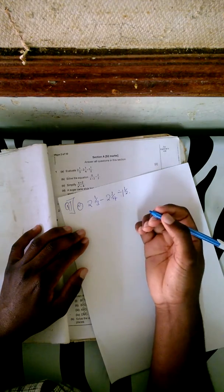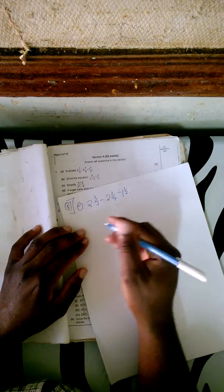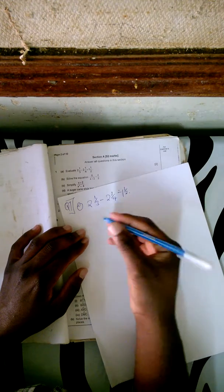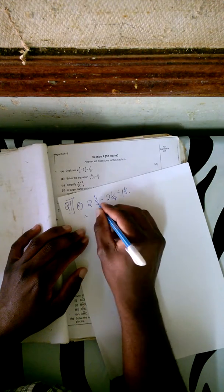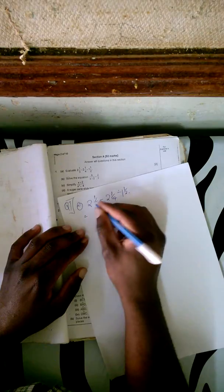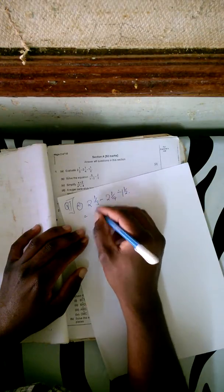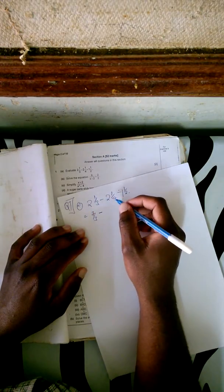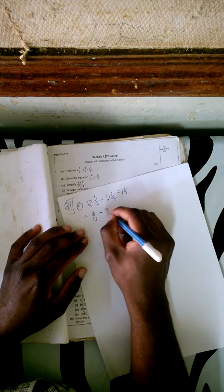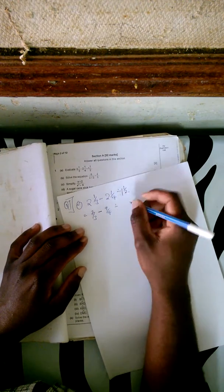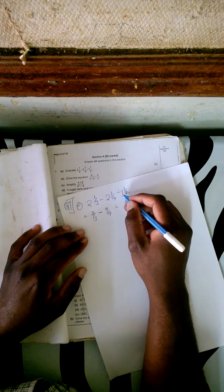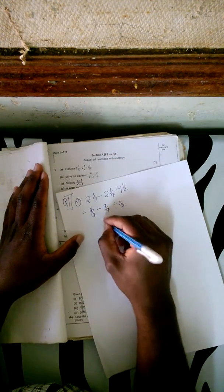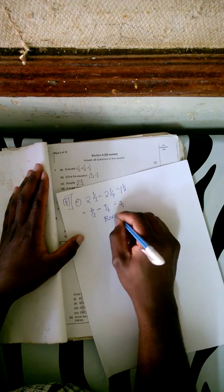As we can see, this fraction is in mixed fraction form, so we are going to convert them into proper fractions. So 3 times 2 is 6, plus 1 is 7 over 3. Minus: 4 times 2 is 8, plus 1 is 9 over 4. Divided by: 2 times 1 is 2, plus 1 is 3 over 2.